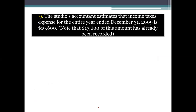Next, the 9th entry: the studio accountant estimates that income tax expense for the entire year ended December 31st 2009 is $19,600. Note that $17,600 of this amount has already been recorded. So the total tax is $19,600, and $17,600 has already been paid.